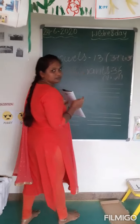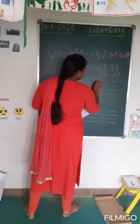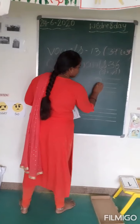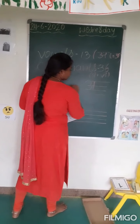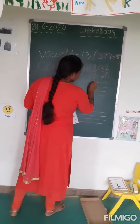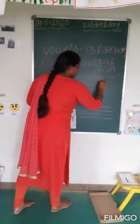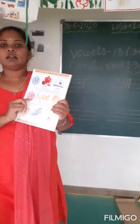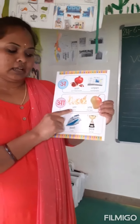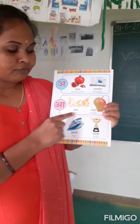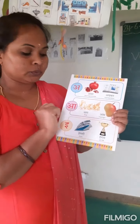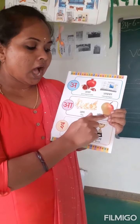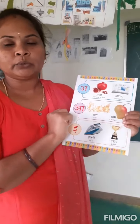Our next letter is AA. To write AA, you first write A, and then draw one more standing line beside it — it becomes AA. AA say Aag — fire. AA say Aam — mango. AA means mango.